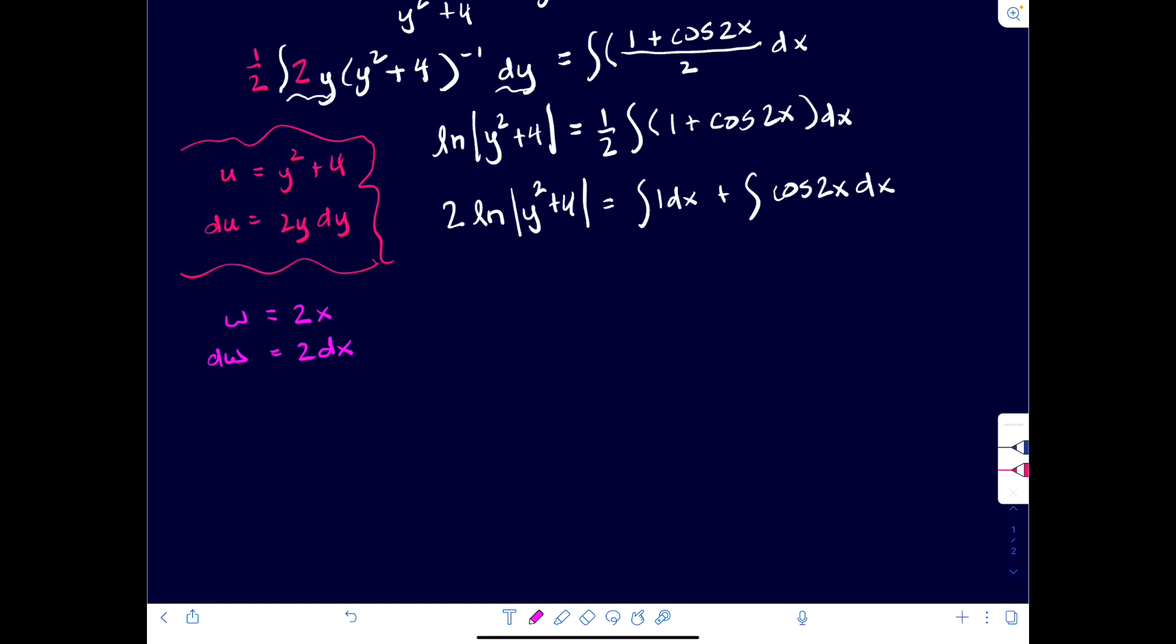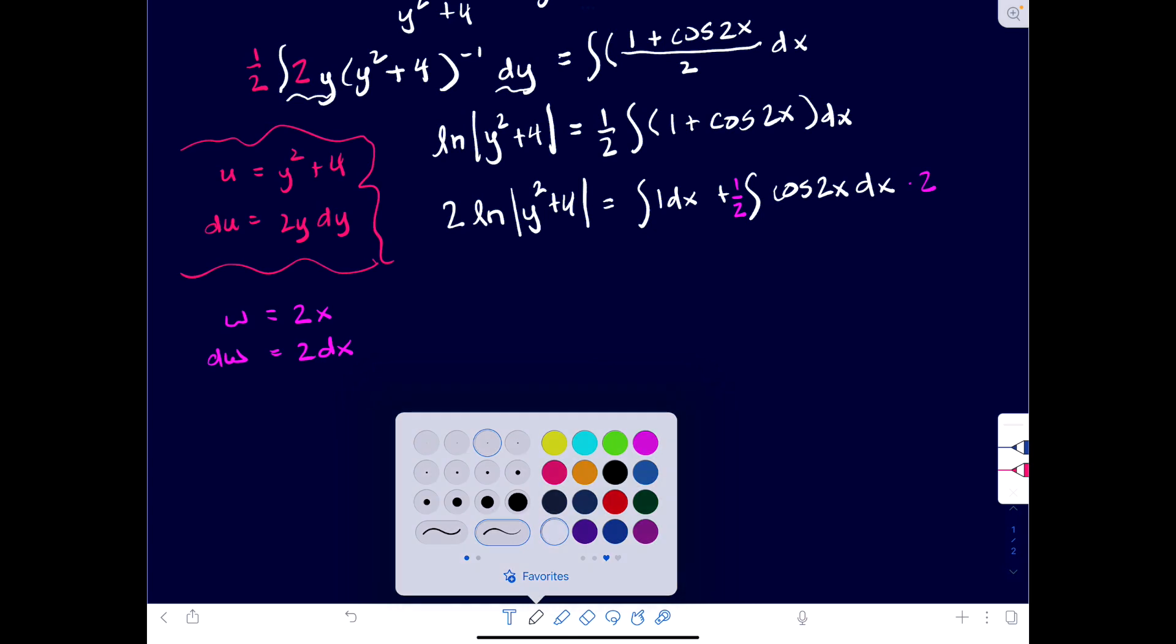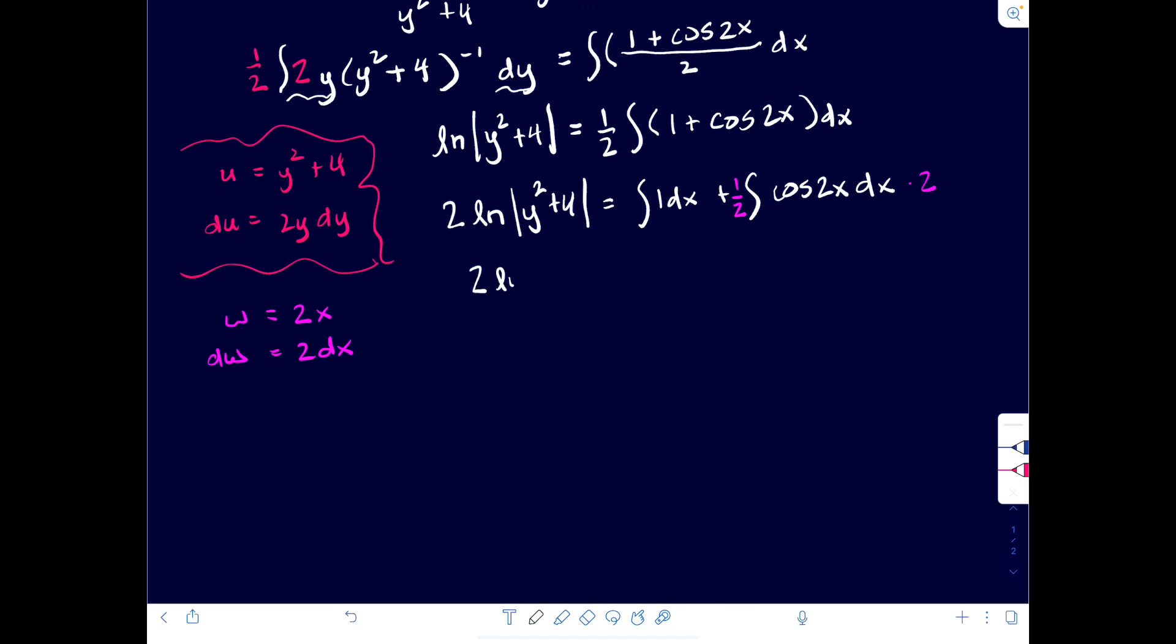But in your brain, you can think, oh, what do I need to balance this by? Well, if you have a 2 dx, you're good to go. You've paid the price of admission to integrate that 2x angle. So I need to balance it out by a factor of one half, and then we will get 2 times natural log absolute y squared plus 4 is equal to x plus 1 half times sine of 2x plus our constant of integration.